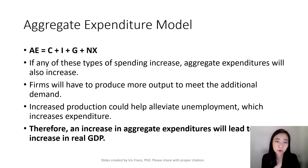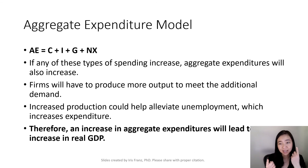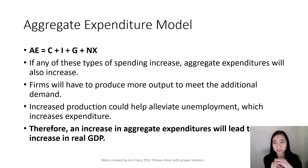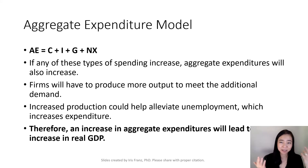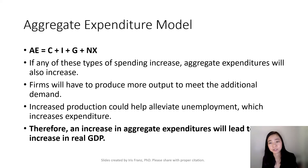Here is the aggregate expenditure model. Aggregate expenditure, AE, is equal to consumption plus investment plus government spending plus net exports. If any of those four items is increasing, that means our aggregate expenditure will go up. When aggregate expenditure goes up, firms will have to produce more to satisfy aggregate expenditure demand. When firms produce more, they are going to hire more workers, which will lower our unemployment rate. Therefore, an increase in aggregate expenditure is going to increase our real GDP.